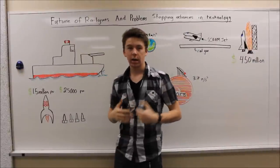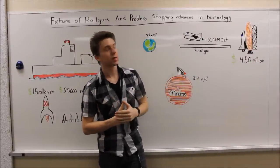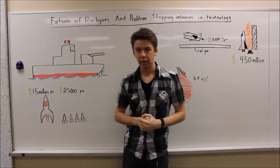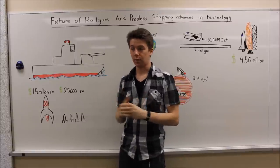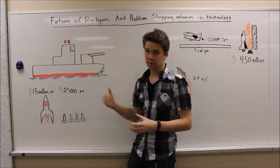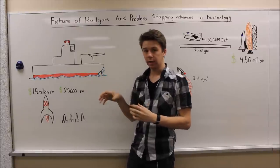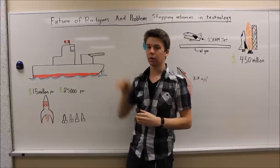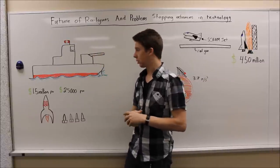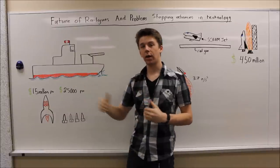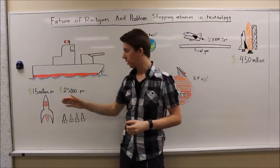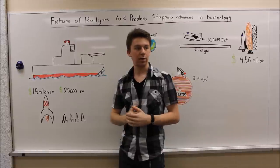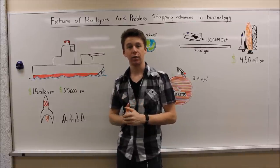So the future of rail guns and problems that are stopping the advance in this technology. The world hopes to use rail guns as a means of weapons. Currently, with gunpowder propellants, Navy weapons are able to shoot up to 12 kilometers. This is still an exceptional range. But anything beyond that, you require rockets. Currently, cruise missiles can travel up to about 250 kilometers.